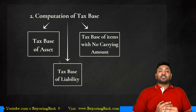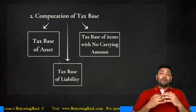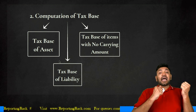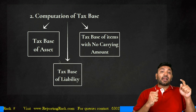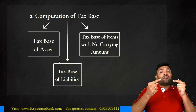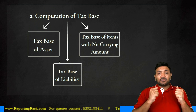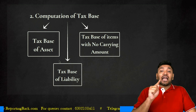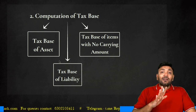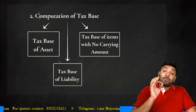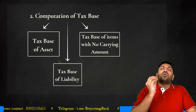What is computation of tax base? It can be broken into three parts: (1) tax base of assets, (2) tax base of liabilities — for all those assets and liabilities where you identified carrying value in step 1, find their corresponding tax base — and (3) tax base of items for which there is no carrying value in the balance sheet. The third is peculiar in nature: the item is not in the balance sheet at all, yet it has a tax base.